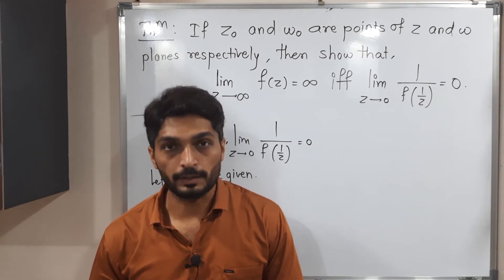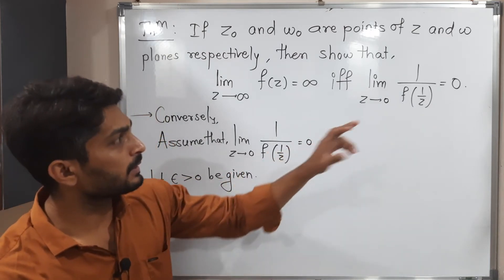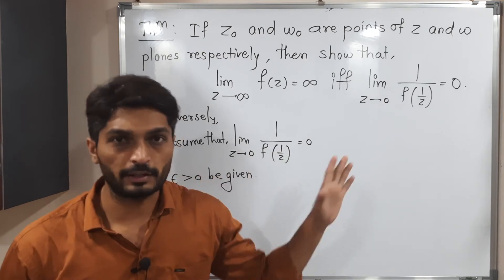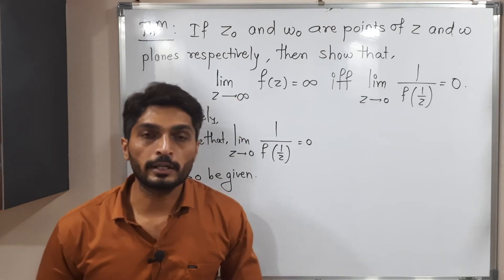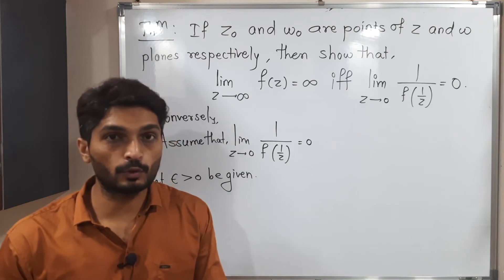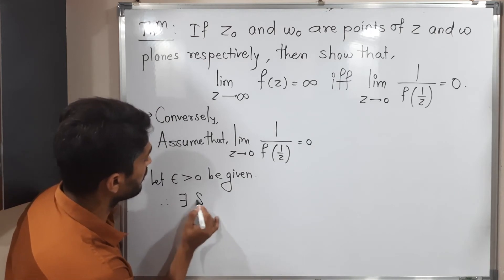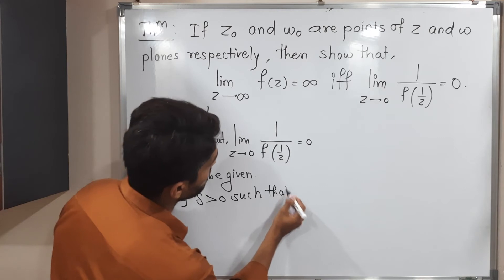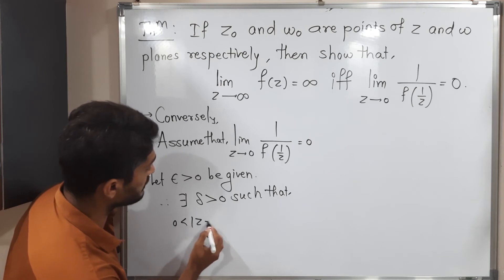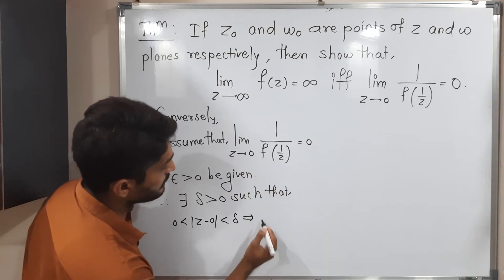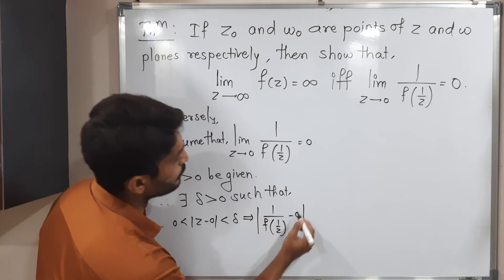Now let us discuss the converse part. We assume that the limit as z approaches 0 of 1/f(1/z) equals 0, and we have to prove the first part. Using the epsilon-delta definition, let epsilon be given. By this assumption, there exists delta greater than 0 such that 0 less than mod(z − 0) less than delta implies mod(1/f(1/z) − 0) less than epsilon.